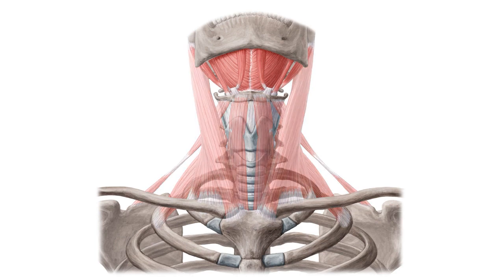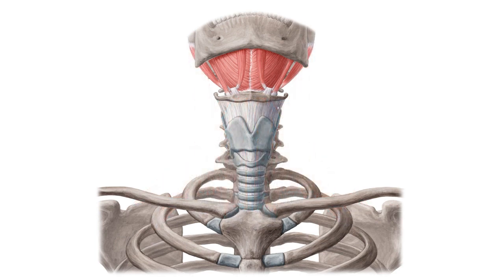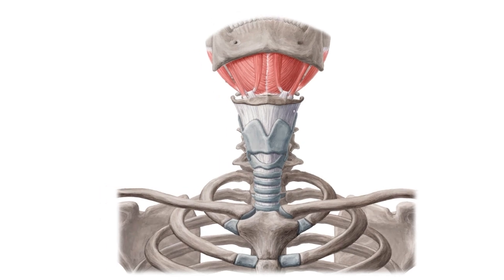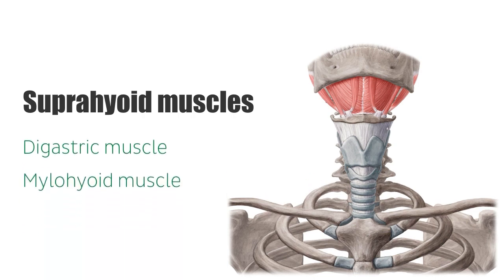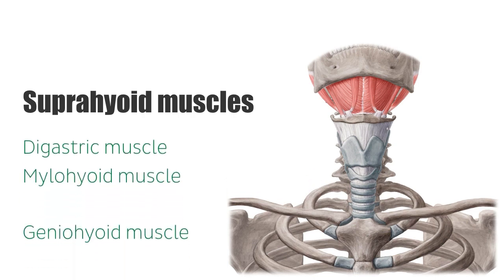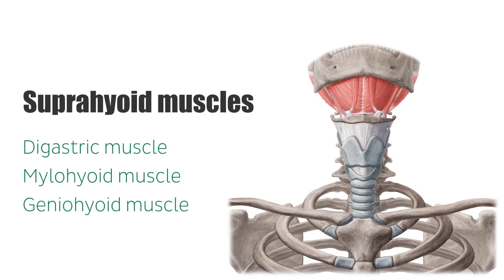In the next image we can see an isolated view of the suprahyoid muscles, which are four muscles running from the mandible to the hyoid bone. Together with adjacent tissue, they form the floor of the mouth. The suprahyoid muscles lift the hyoid bone up, while the infrahyoid muscles do the opposite by depressing the hyoid. The four suprahyoid muscles are the digastric muscle, the mylohyoid muscle, the geniohyoid muscle, and the stylohyoid muscle.